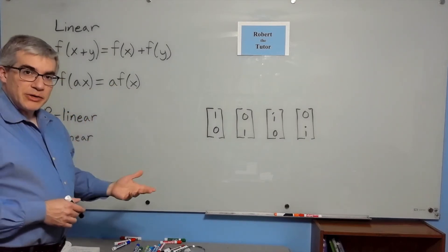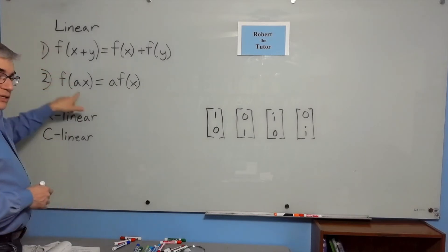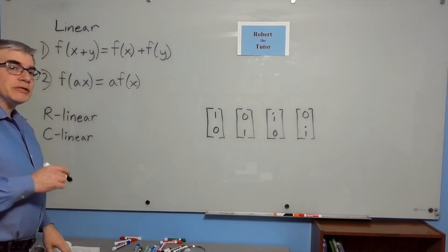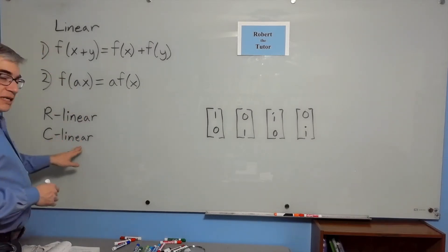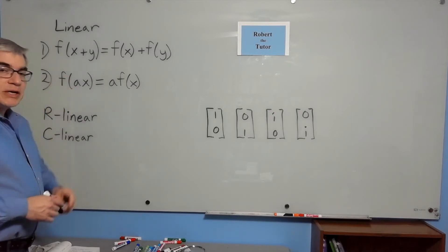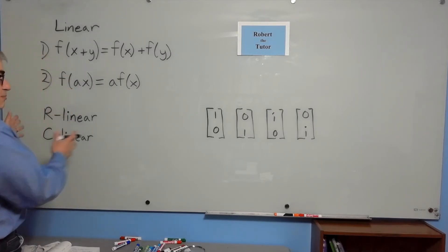Now what does it mean to be R-linear? It means that in the second condition, A has to be a real number, and if something is C-linear, that means A can be a complex number, and that's a very important distinction.